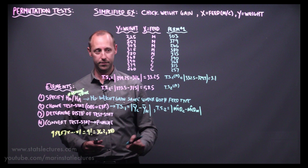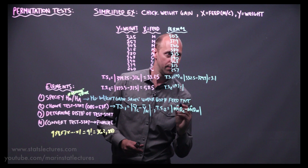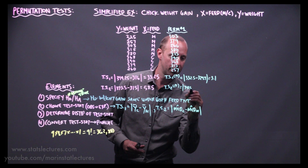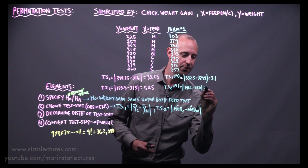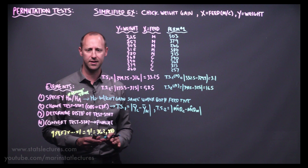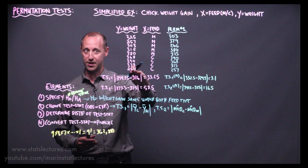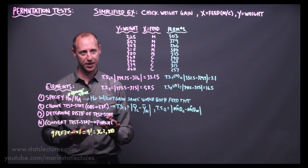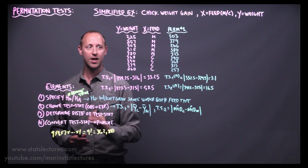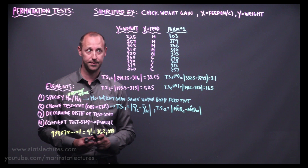For this permutation data set, we calculate test statistic one — the mean for the casein group is 332.5, the mean for meat meal is 329.4, and the absolute difference is 3.1. For test statistic two, the median for the first group is 341.5, the median for the second group is 325, and the absolute difference is 16.5. These give us an idea of what type of test statistics show up if the null hypothesis is true and observations are independent of feed type.